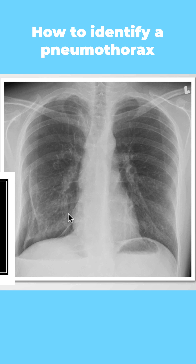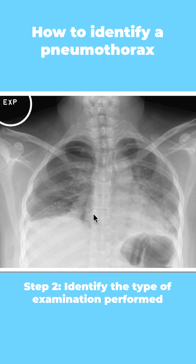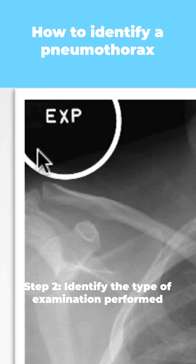So how do we identify a pneumothorax? The first step is to make sure that the patient is properly centered and is not rotated. Next, we need to understand what kind of examination was performed. In this case, we have markers telling us that this was an expiration film.